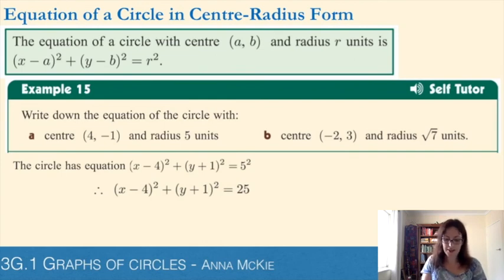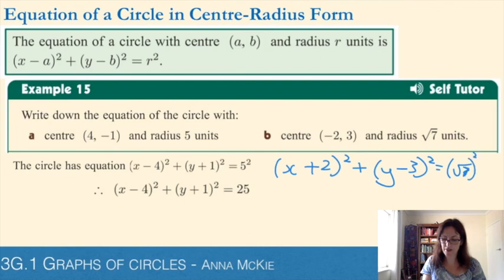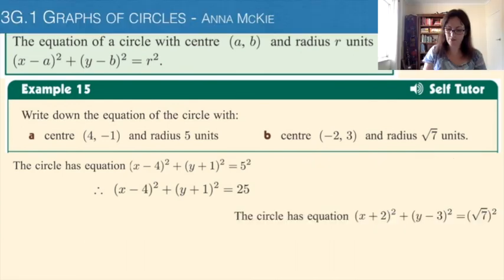And the second one, center with (-2, 3), so it becomes a plus because we're dealing with a negative 2, then it's a plus at that position. Y subtract 3, all squared, equals. Now this is a good habit to get into. Write the square root of 7 squared, so you get into the habit of writing that square. And then on the next line, you can simplify that. Here it is written out neatly, with the root of 7 squared, and then simplified.